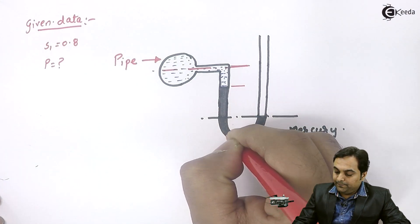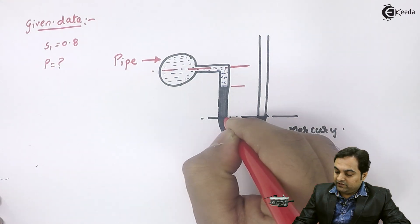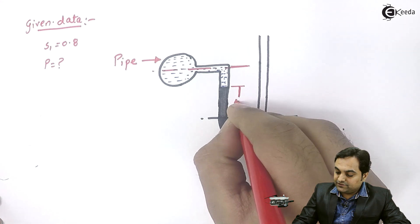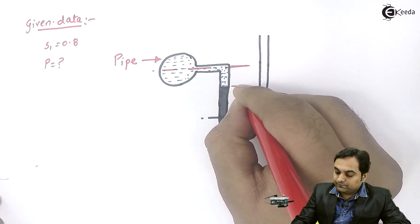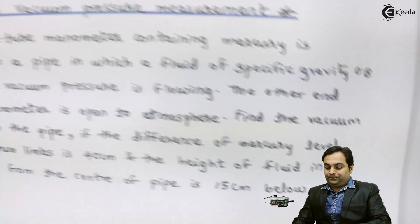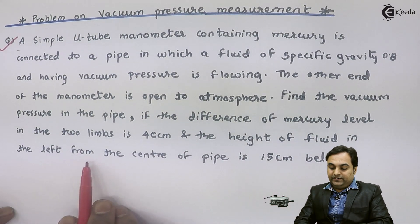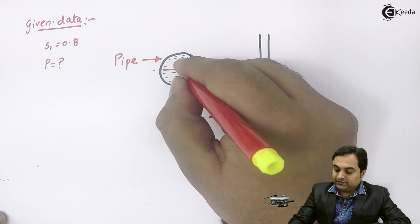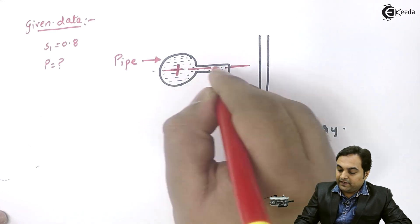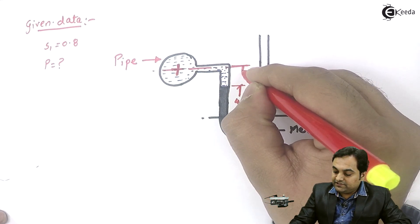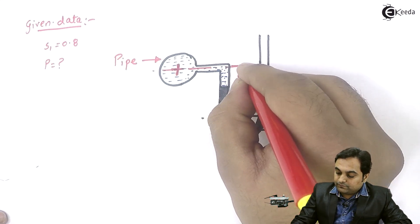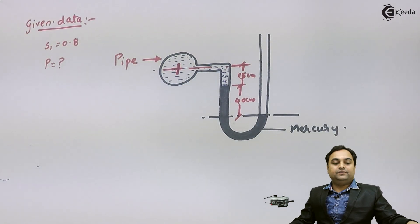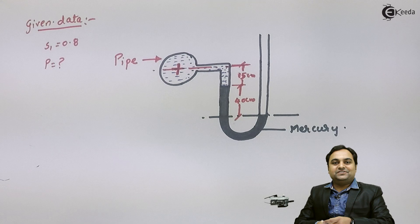This portion is called the left limb and this is the right limb. The mercury level difference measured from the surface is 40 centimeters. From the center of the pipe, the fluid extends 15 centimeters below. This is all the data we have, so let us find the solution.